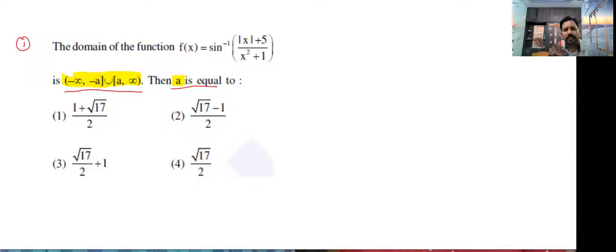Domain of sin inverse function lies between minus one to one only. So minus one less than or equal to mod x plus phi divided by x square plus one less than or equal to one. But observe that mod x plus phi and x square plus one both are positive only, so that is we can consider zero less than mod x plus phi divided by x square plus one less than or equal to one.